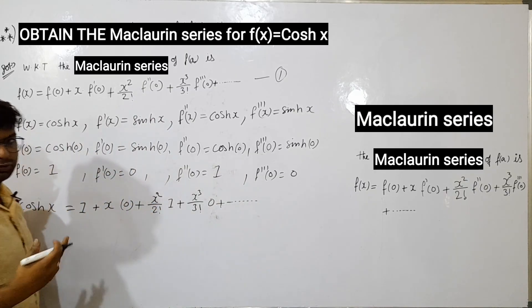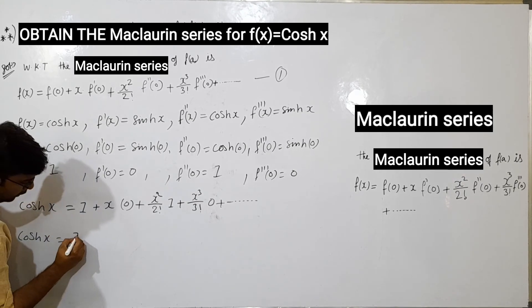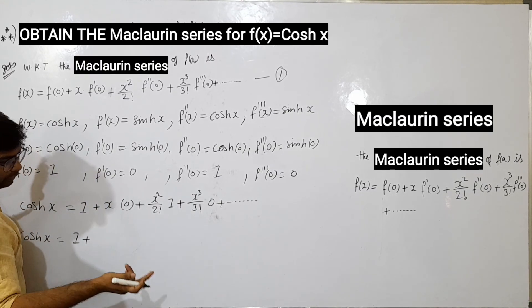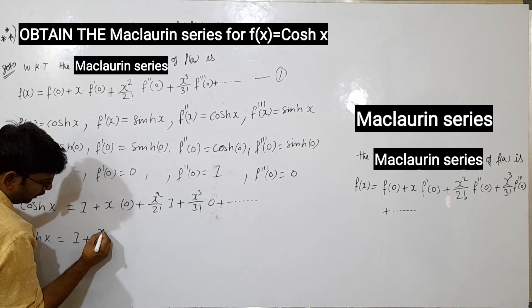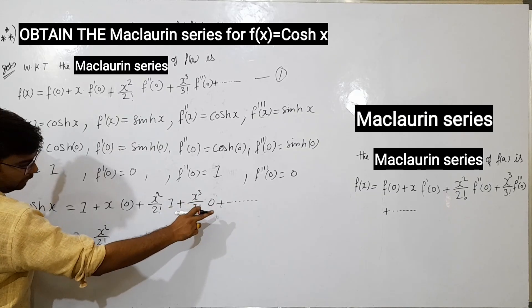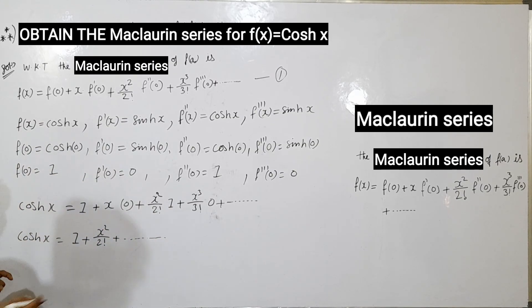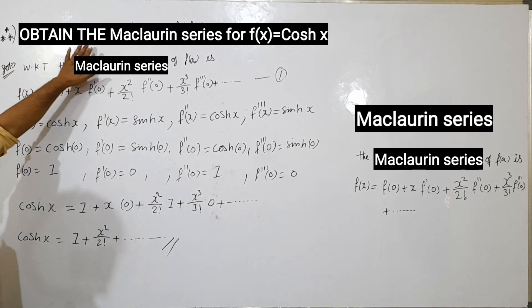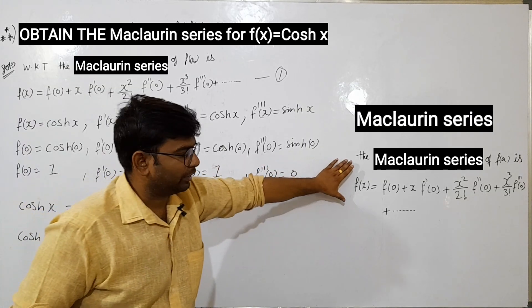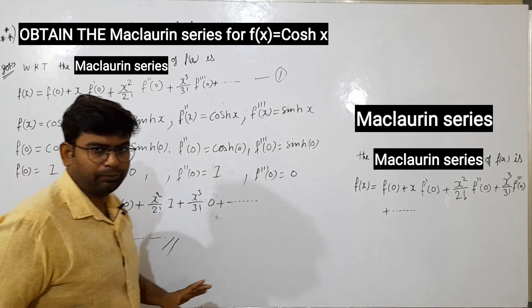So, continuing to the fourth and fifth terms: cosh(x) = 1 + 0·x + x²/2! + 0·x³/3! + x⁴/4! + ... and so on. The x·0 terms vanish. So x²/2! remains. This is the final answer — the Maclaurin series expansion of cosh(x).